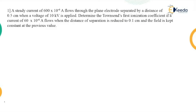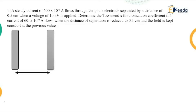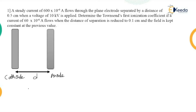Let us begin with the first numerical. A steady current of 600 × 10⁻⁶ Ampere flows through the plane electrode. One side is cathode and another side is anode, with a gap of distance d = 0.5 centimeter, and a voltage of 10 kilovolts (10,000 volts) is applied to this electrode.